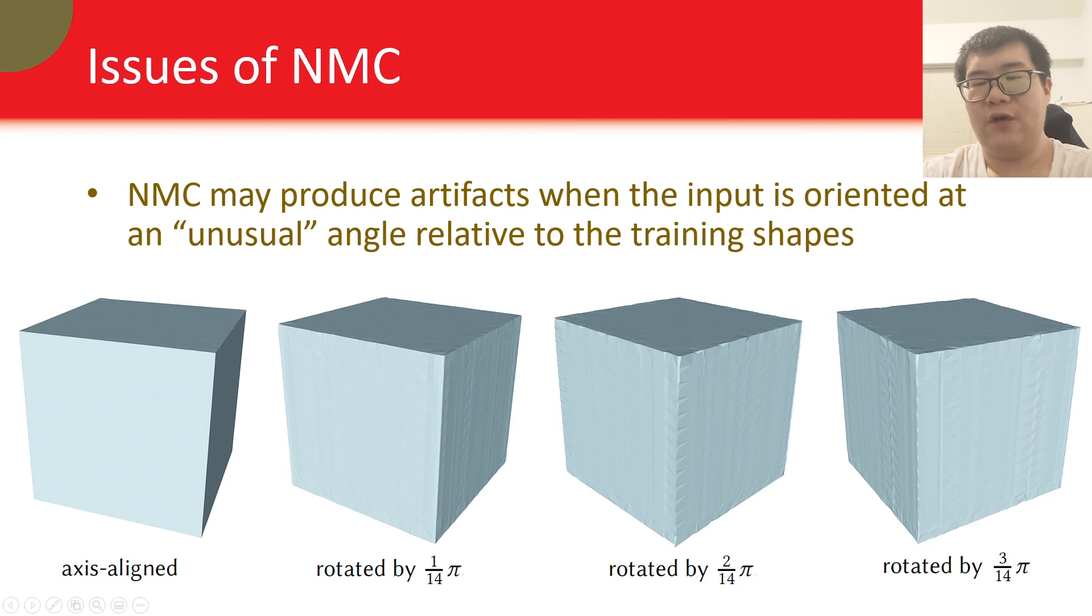There are a few issues of our current approach. First, it may produce artifacts when the input is oriented at an arbitrary angle relative to the training shapes. This is expected because our model learns from data. Performing data augmentation and introducing more training data could alleviate the issue.